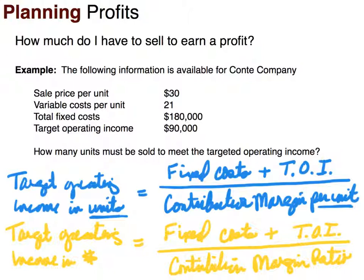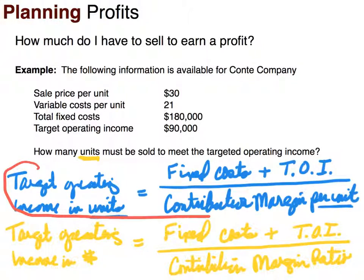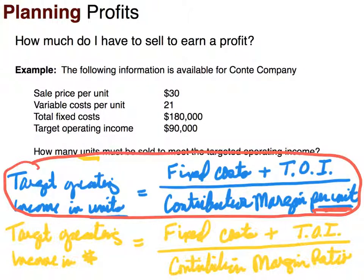Now we can look at the example. The following information is available for Conte Company. The question asks: how many units must be sold to meet the target operating income? Since we need a per-unit answer, we'll use the first equation. I'd like you to push pause and calculate the number of units that must be sold to meet the target operating income of $90,000.